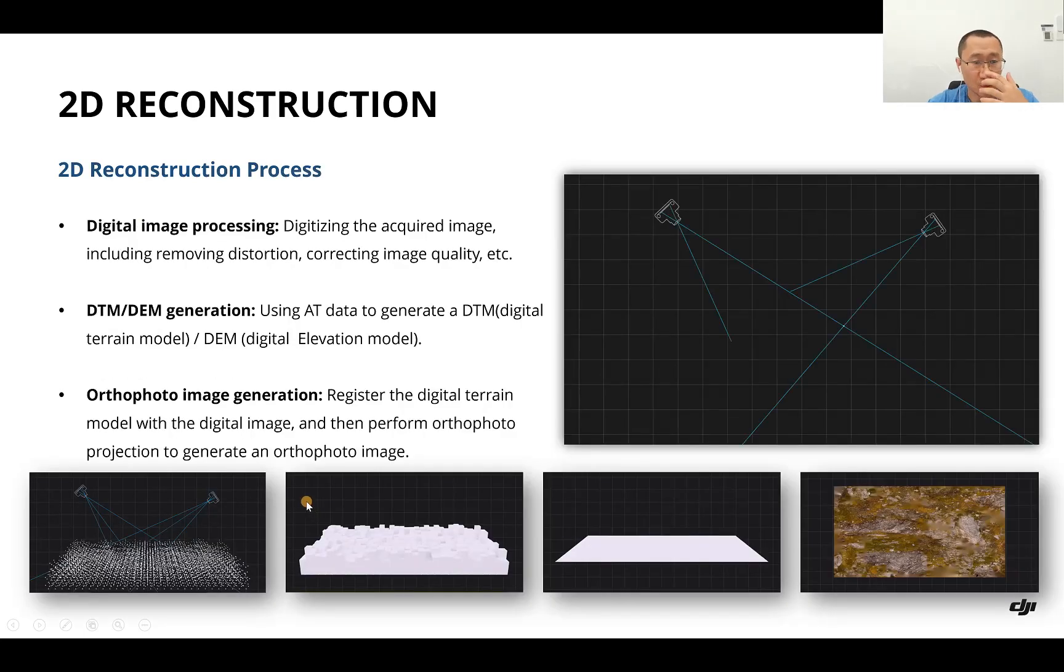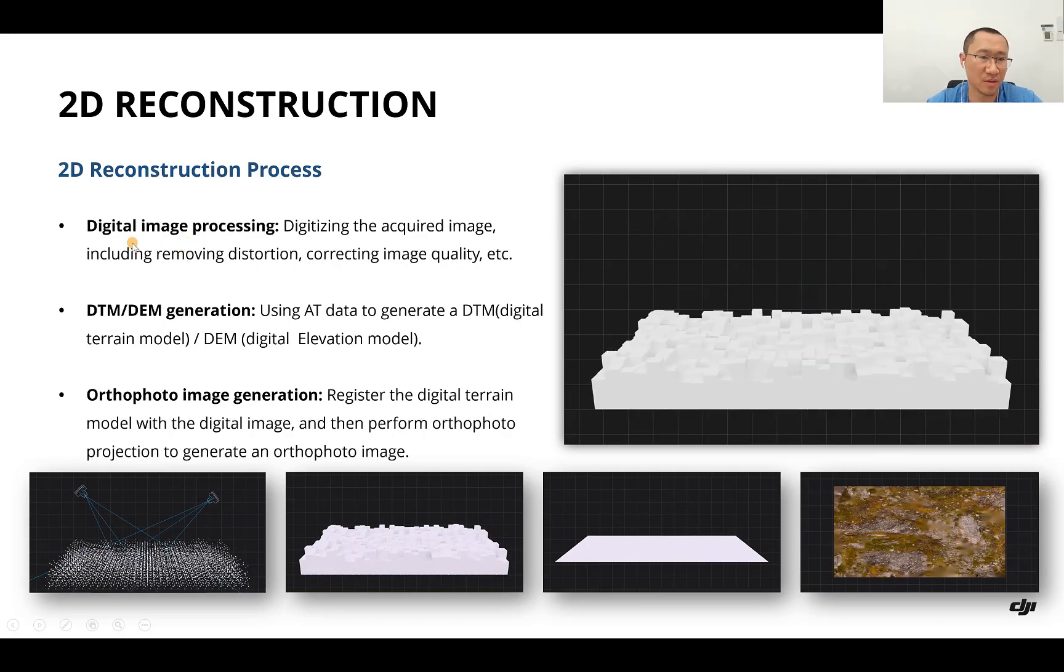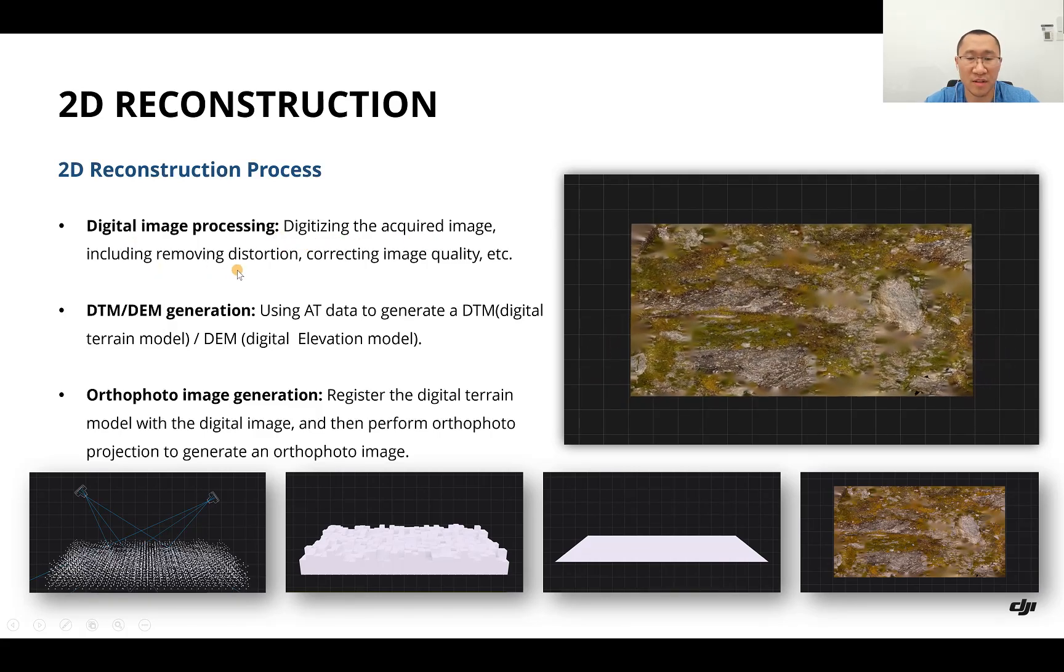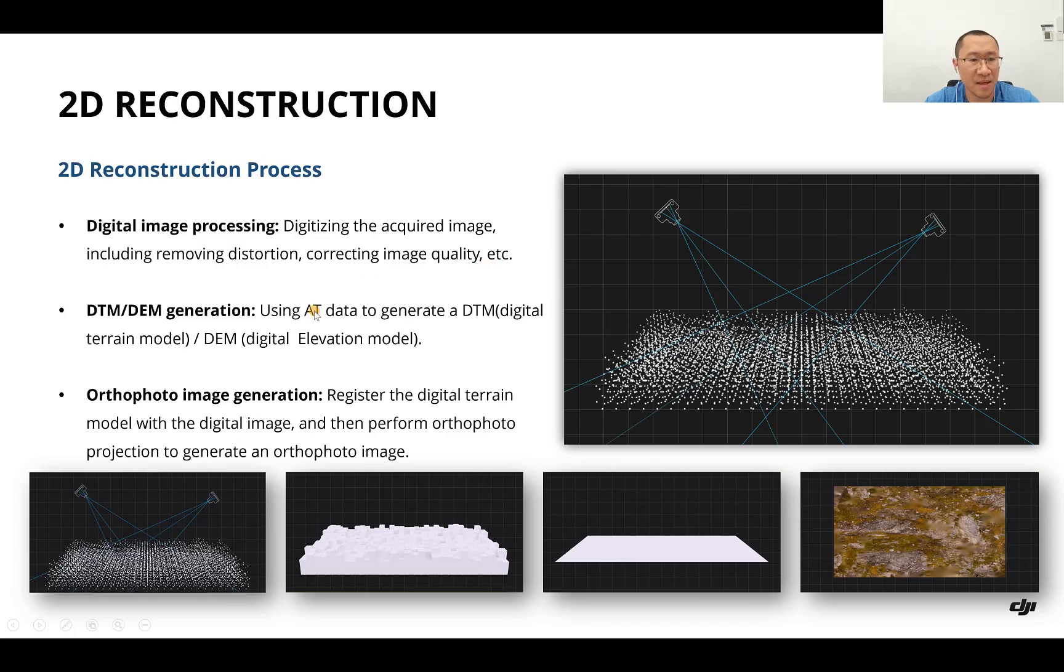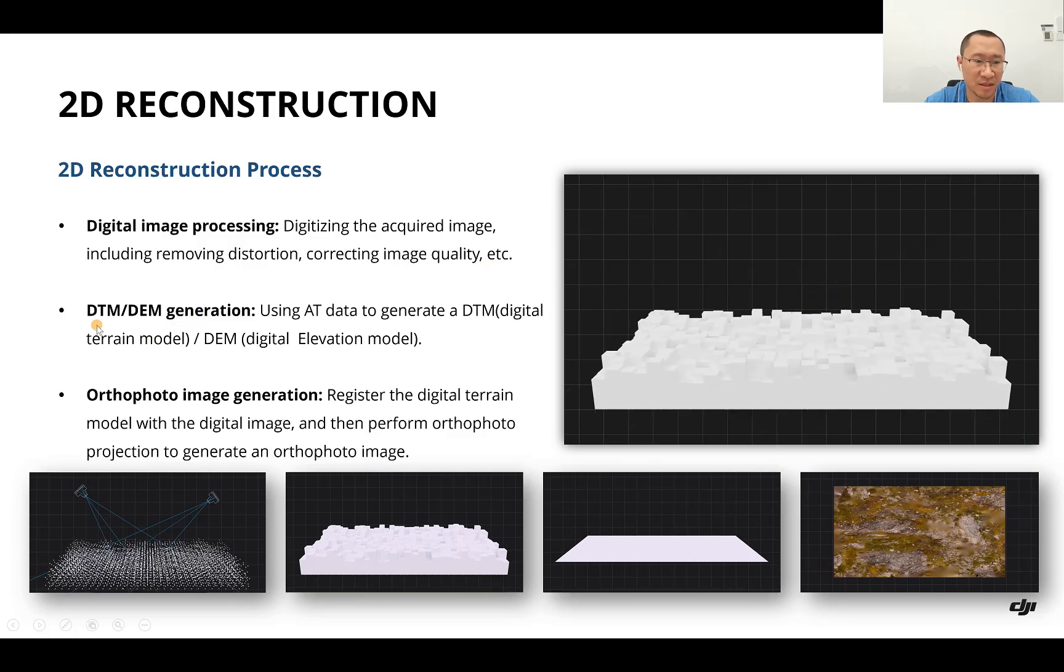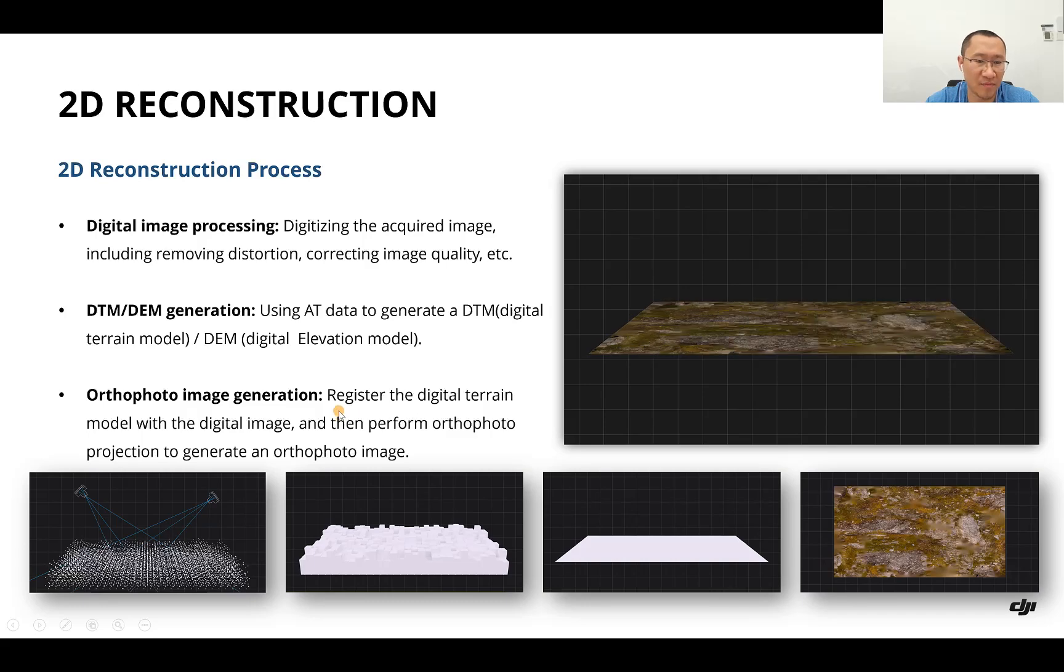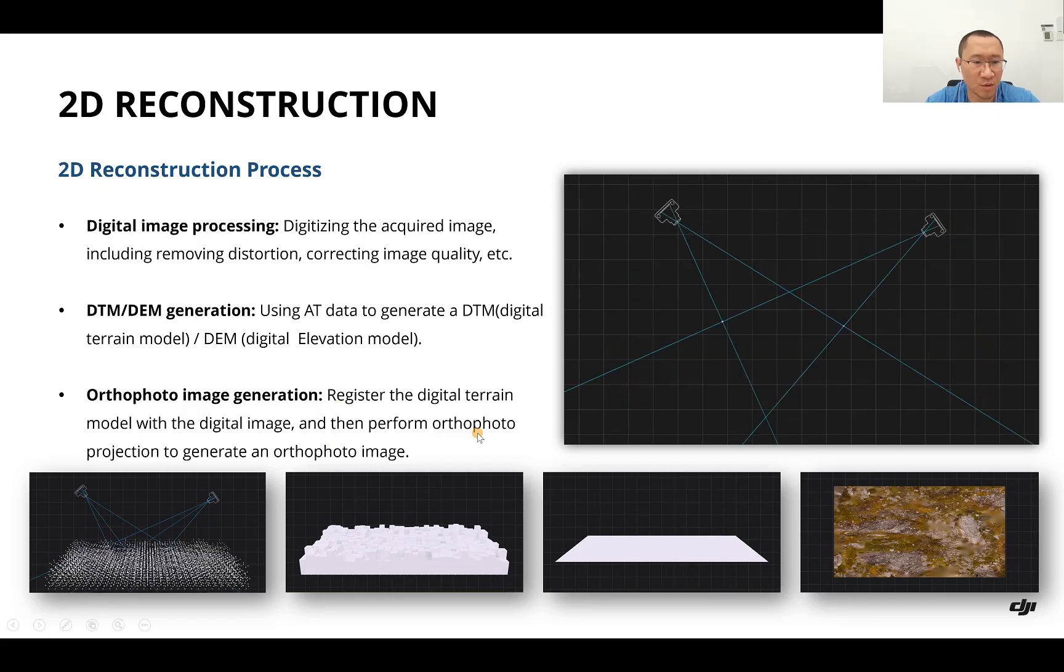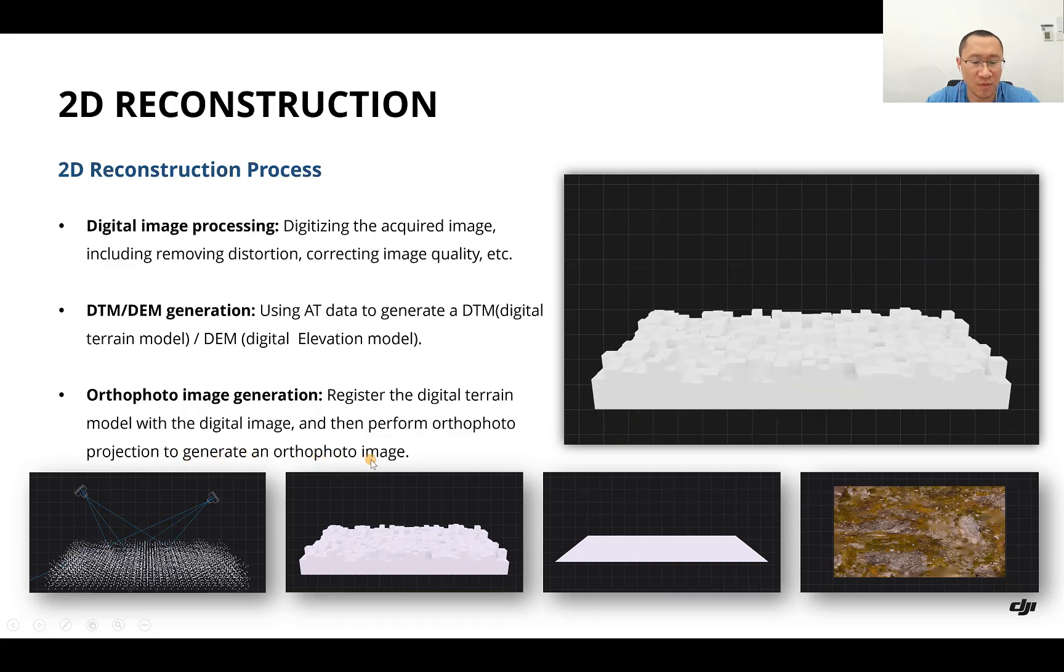The process of 2D reconstruction: first we do digital image processing, digitalizing the acquired image including removing distortion and correcting image quality. Then we generate DTM and DEM. Using the DTM or DEM, we perform orthophoto projection and generate the orthophoto image.